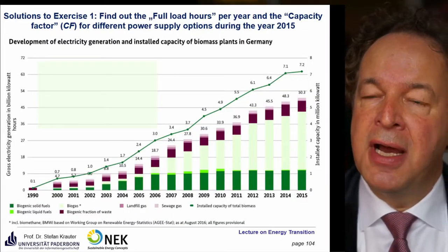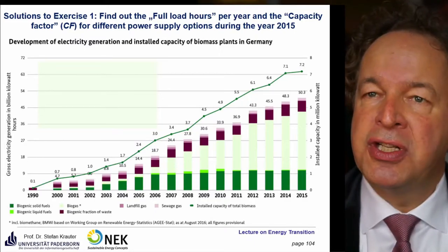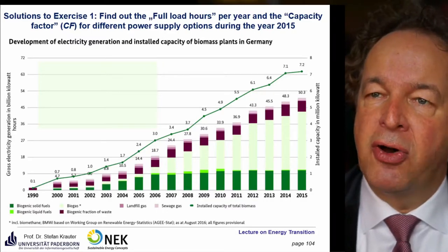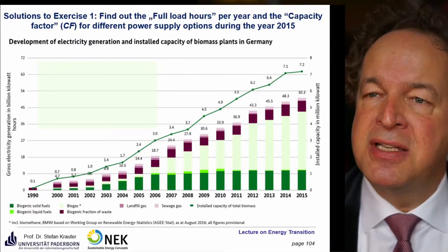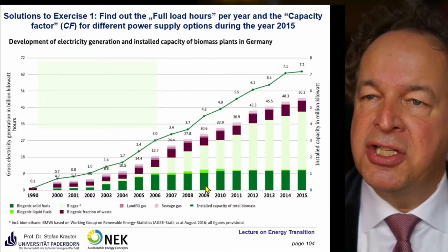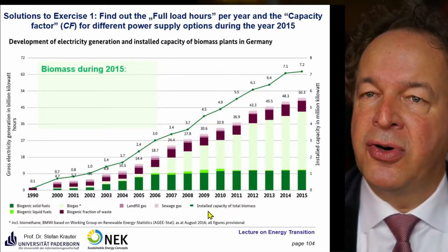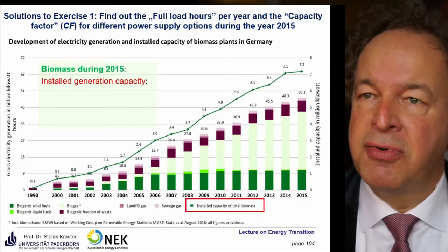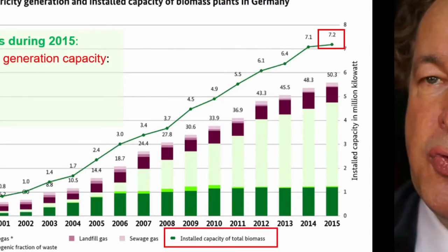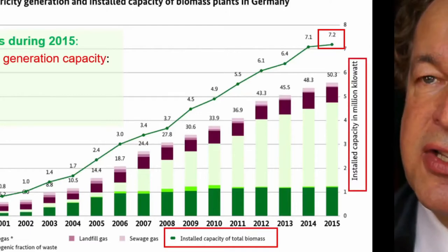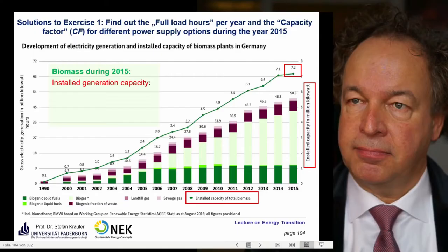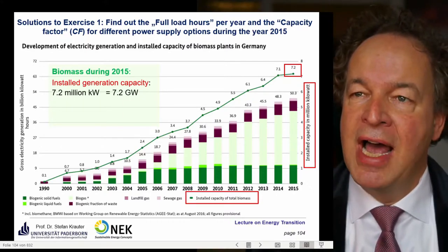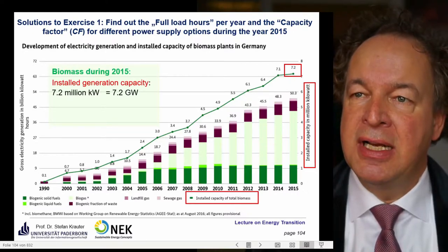Let's start with the biomass energy. We first want to know the full load hours, so we need to know the installed capacity. This kind of graph may be somewhat misleading, so we take a look at the legend. It says here for the installed generation capacity, that's a green line. The equivalent unit is the installed capacity in million kilowatt, so this is 7.2 million kilowatt, equivalent to 7.2 gigawatt. That's the nominal installed capacity.